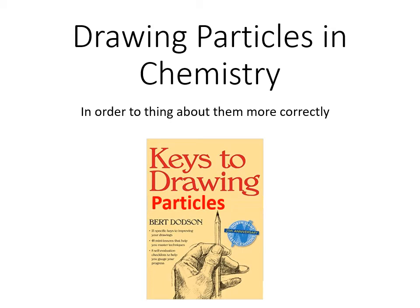We're drawing particles in chemistry in an attempt to understand what the particles are actually like. Chemistry essentially comes down to figuring out what the particles are, and once you know what they are you can figure out what they're going to do. We try to draw them to understand what they're actually like, which can sometimes be deceiving based on how we write their formulas.